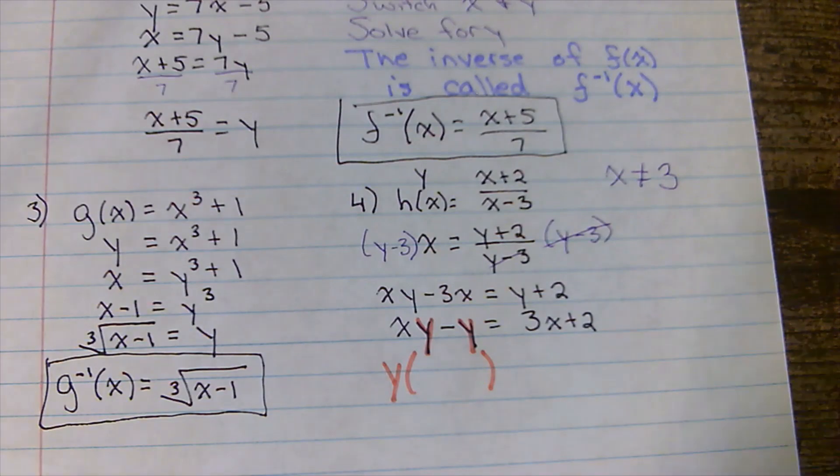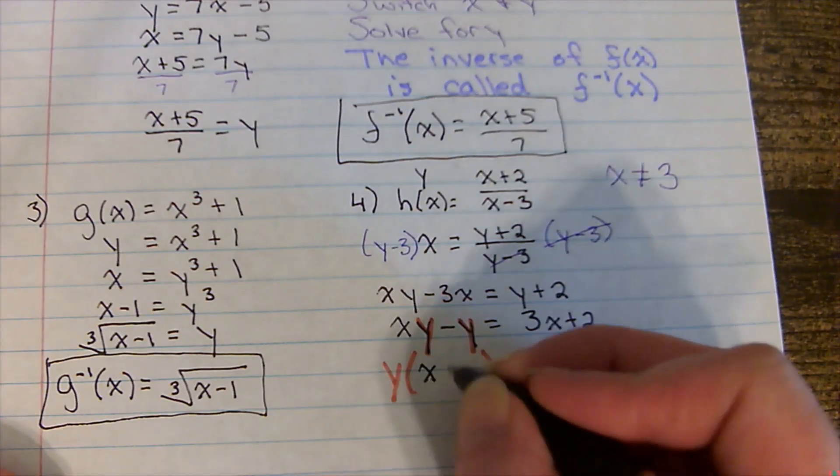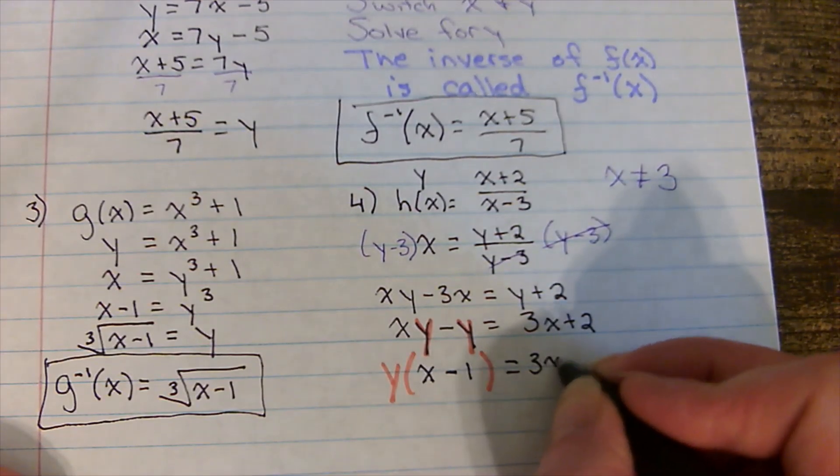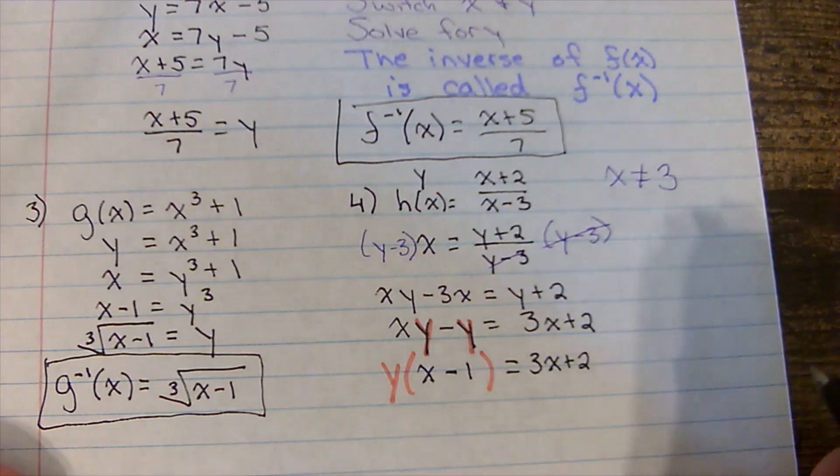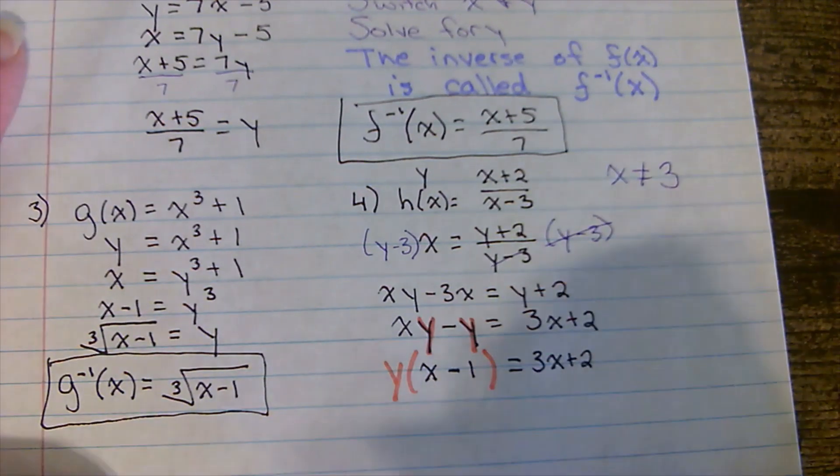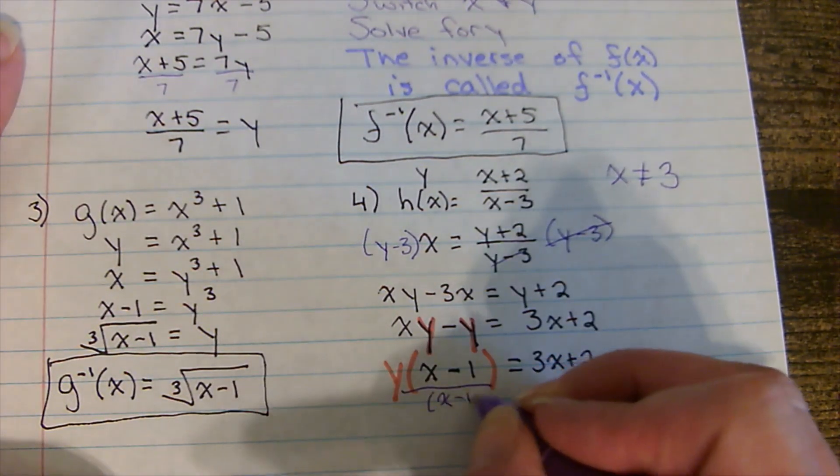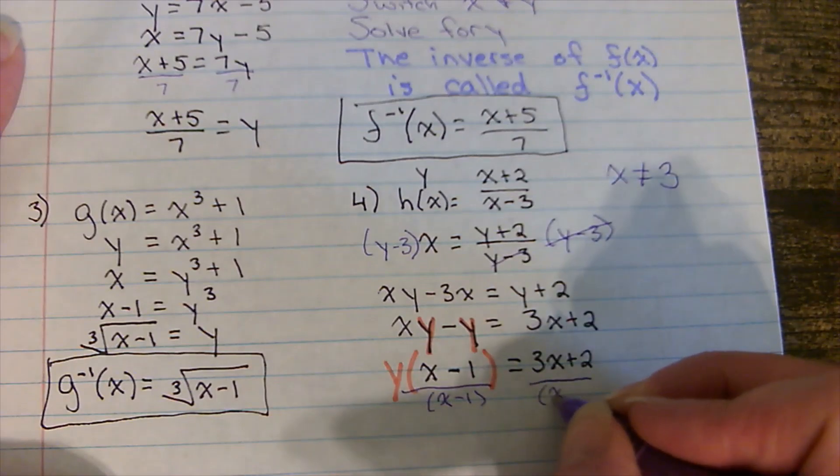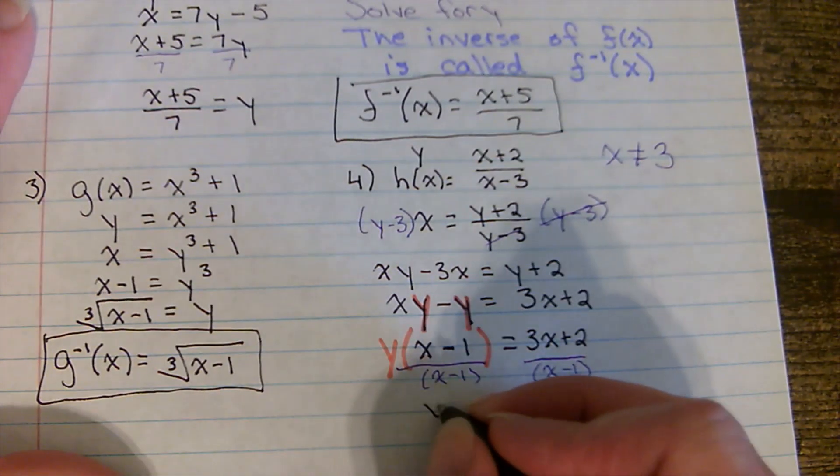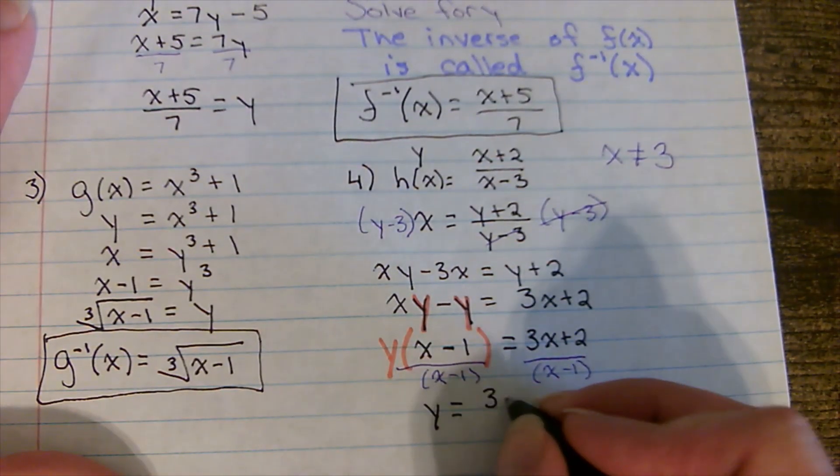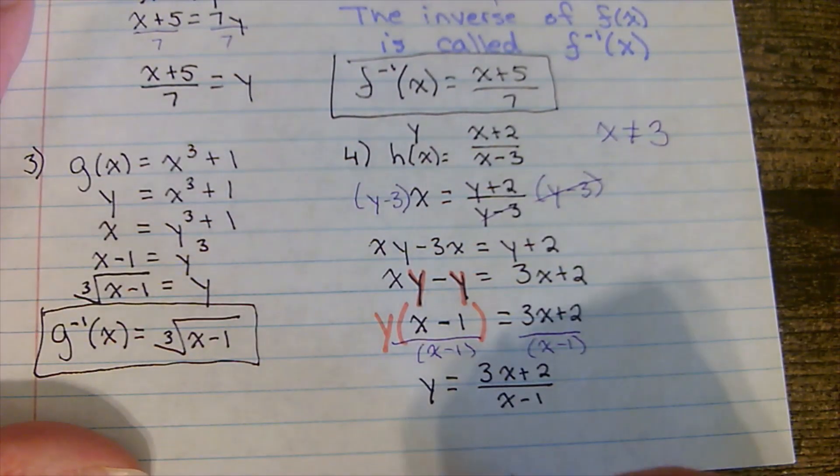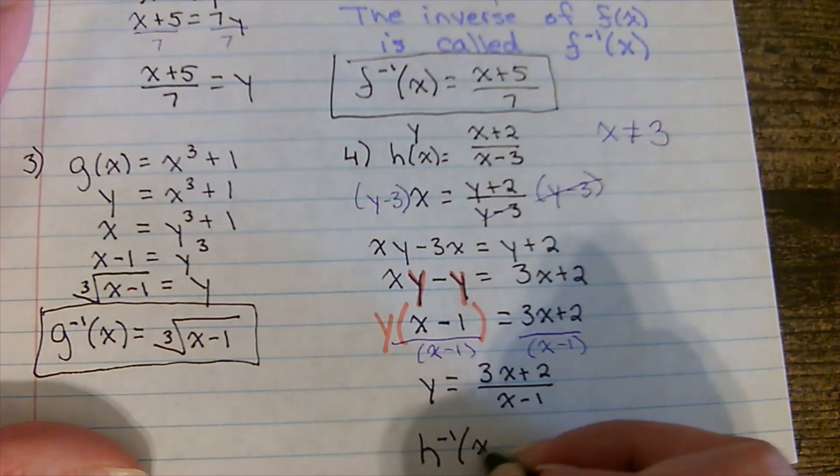So I'm going to factor out the y and what would be in the parentheses. So y times x is xy, and then this would need to be a negative one. Well, now to get y by itself, I would have to divide both sides by that parentheses. Y is going to be by itself. It'd be y equals 3x plus 2 over x minus 1. But that's not his proper name. It's the inverse of h.